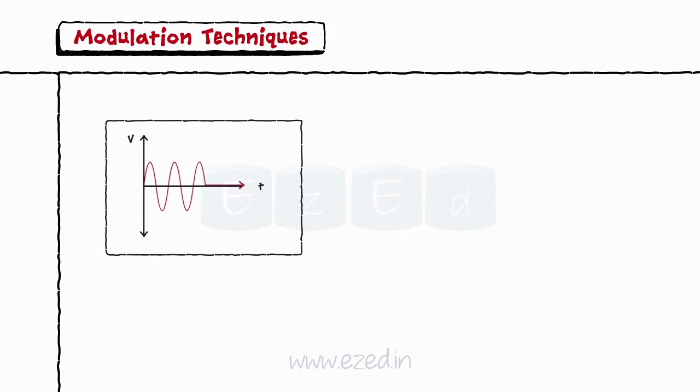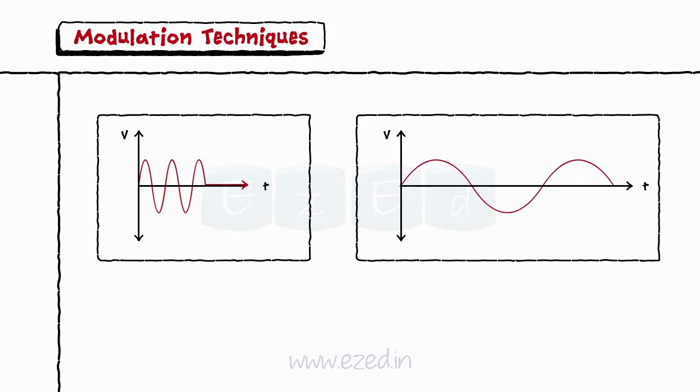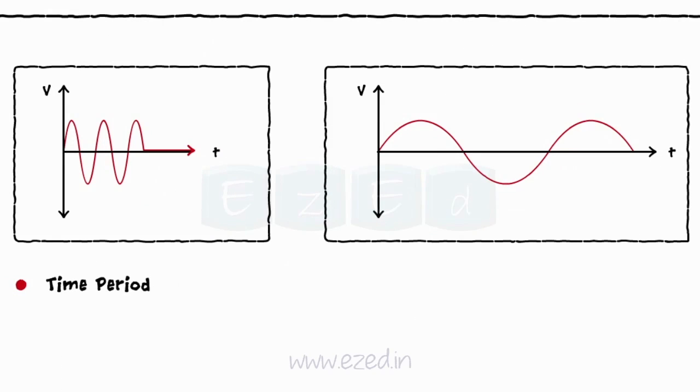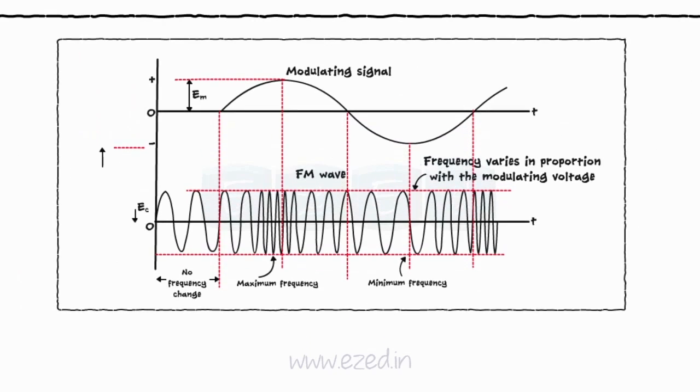We know that the frequency and the time period are reciprocals of each other. Thus, when the time period of a signal is minimum, we get maximum frequency and vice versa. We can see above.